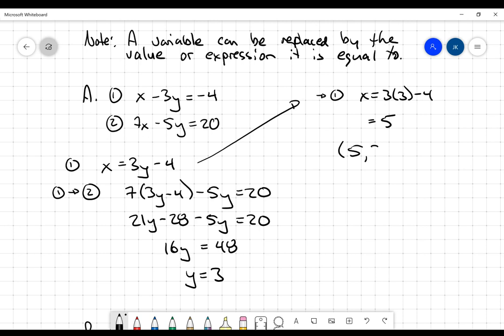So I'm expecting that the point that is a solution to this system is the point 5 comma 3. Now let's check it. Bearing in mind that I just used equation one to get the value for y, I'm going to check this in equation two. So 7 times 5 minus 5 times 3, does that equal 20? 35 minus 15 equals 20. Yes, it does. Left side equals right side.